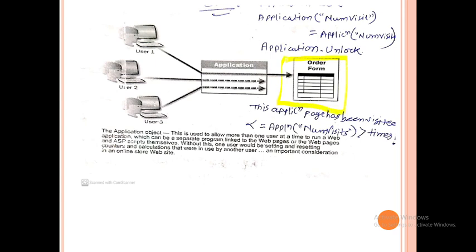A form is accessible by three users: user1, user2, and user3. These three users are accessing the same form. This demonstrates the use of the Application object — why it is important.